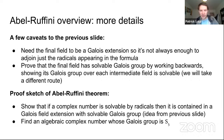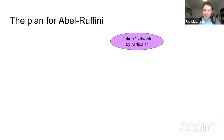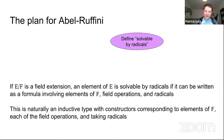Next I'm going to talk about our plan for proving the Abel-Ruffini theorem and what we've done so far. The first thing is to define a field extension solvable by radicals. Literally, an element is solvable by radicals if you can write it in terms of elements of F, field operations, and taking radicals. This very naturally looks like an inductive type with constructors corresponding to each one of those things.